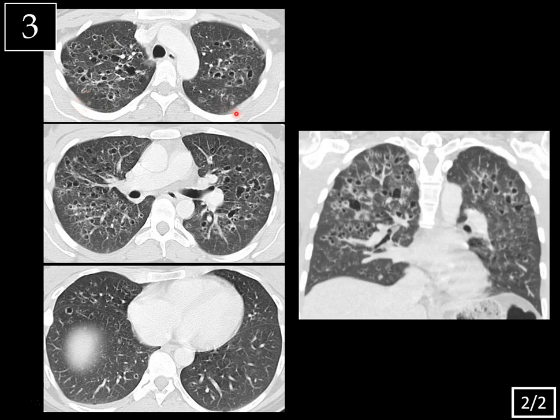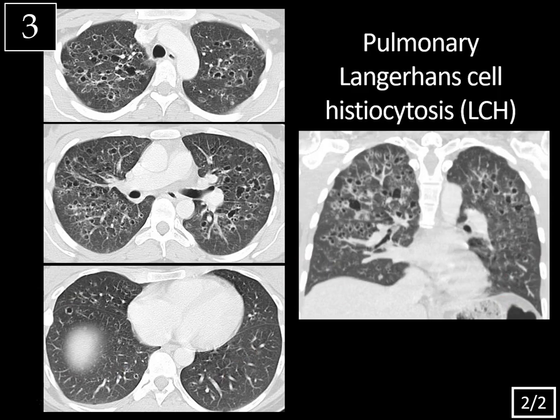We also see a few faint ground glass nodules scattered throughout the lungs — it's a combination of cysts and nodules, not just cysts. A key point is that the lung bases are relatively spared; notice how the costophrenic angles have no involvement. In a 30-year-old smoker, this is typical for pulmonary Langerhans cell histiocytosis. This type of LCH occurs in young adult smokers, typically 20 to 40 years of age. The distribution — with the lung bases relatively spared — is key.